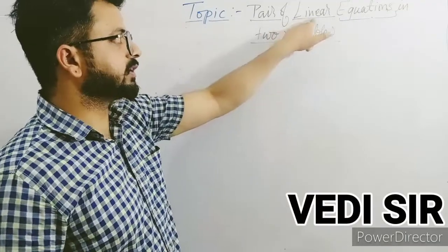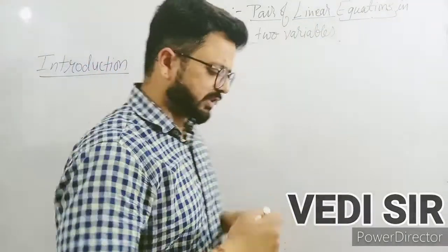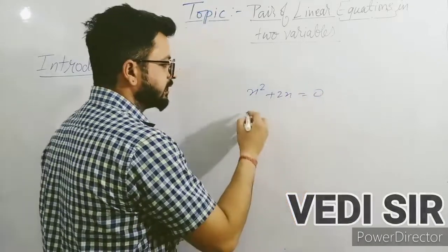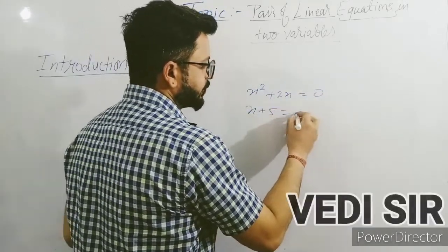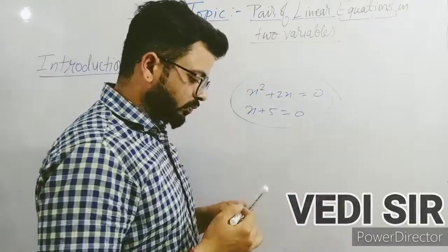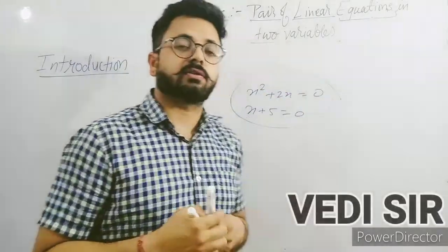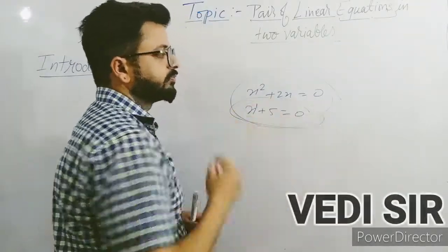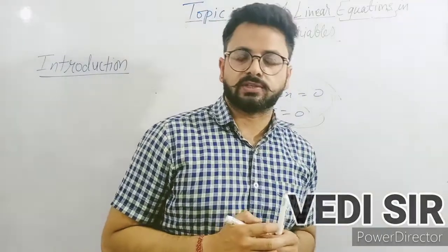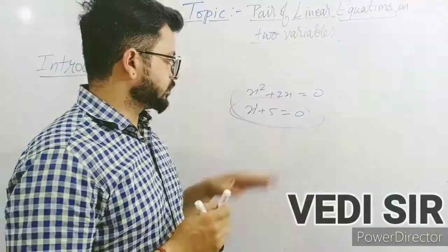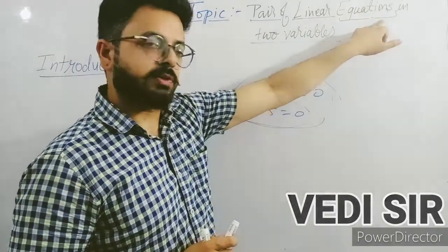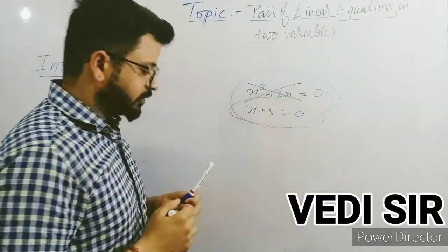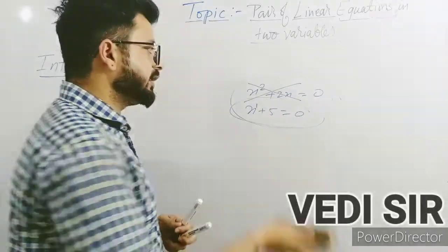Now 'linear' — linear means equation. Consider all equations: x² + 2x = 0 is also an equation, and x + 5 = 0 is also an equation. So what is the meaning of linear? Linear means we are talking about equations whose power is 1 — whose degree of the equation is 1. So we are talking about linear equations.